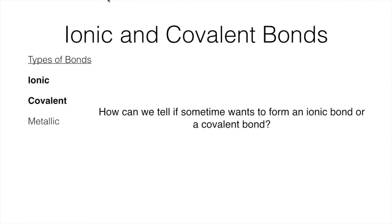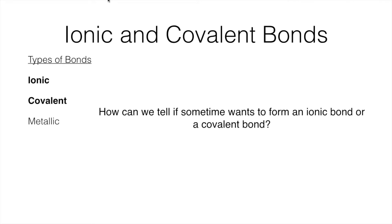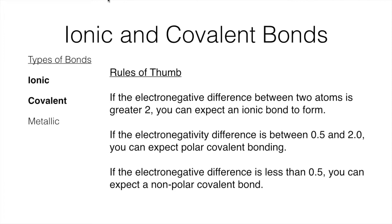Now that we have the major types of bonds established, we want to ask: how can we tell if something is going to form an ionic bond or a covalent bond? To figure that out, we're going to use a concept called electronegativity. You can think of electronegativity as an atom's desire to pull electrons towards itself. You'll notice that fluorine in the top right of the periodic table has the highest electronegativity, meaning it strongly pulls electrons towards it. To determine bond type, we need to look at the difference in electronegativities between two atoms.